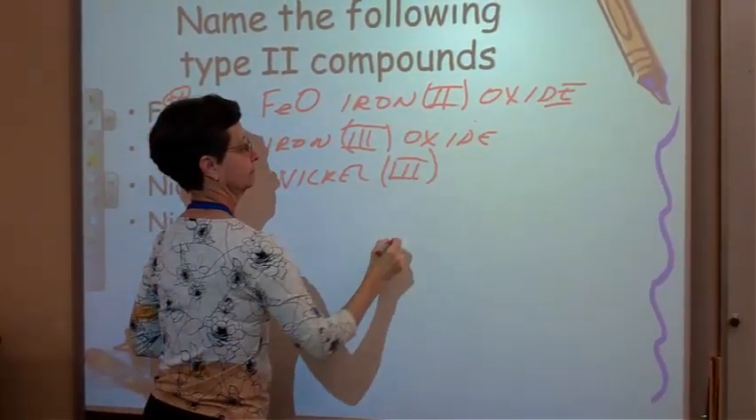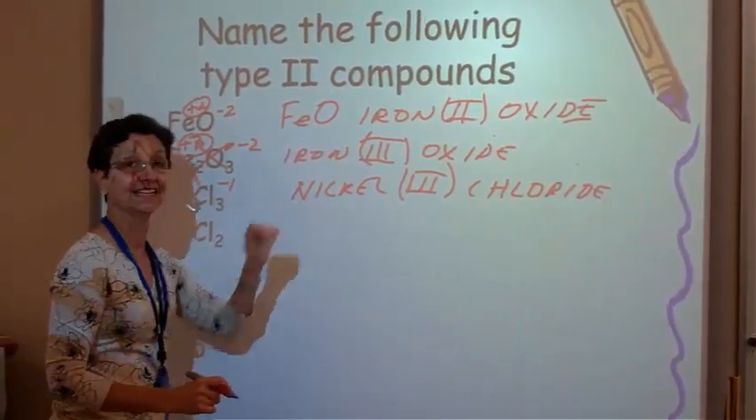So we're going to say, we're going to work backwards. 1, and this comes up here, plus 3, meaning nickel 3 chloride. Notice they all end in IDE. Notice they all end in IDE. All the monatomic anions end in IDE.